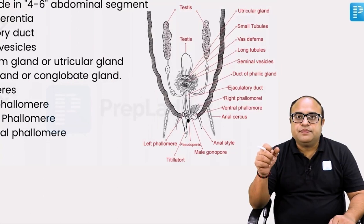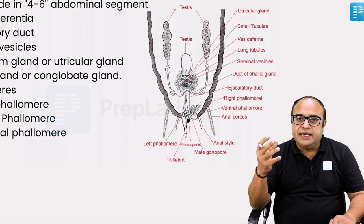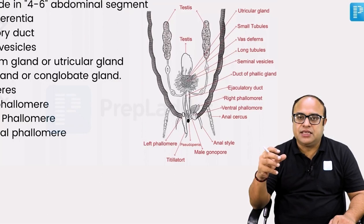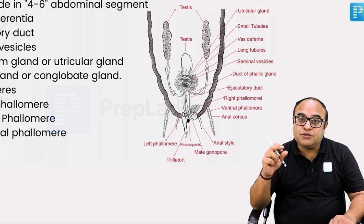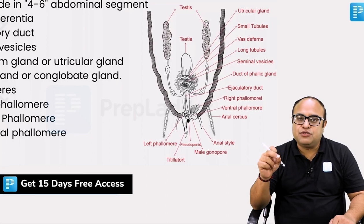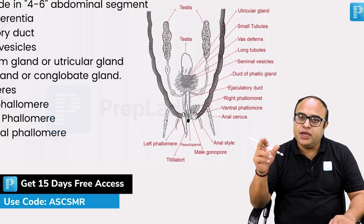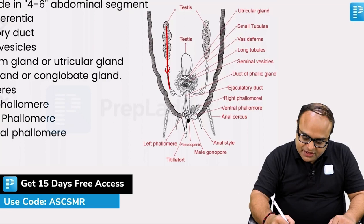Now the passage of sperm: how is sperm being transferred? There may be questions asking you to trace the path of the sperm and know every milestone it passes through before being released into the female gonopore. The journey of the sperm begins from the testes, and they are stored in the seminal vesicle.